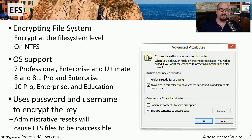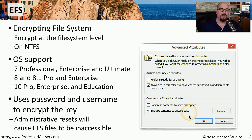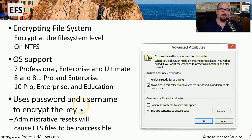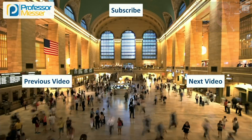Most of the complexity associated with encryption is hidden from users. They simply look at the file's attributes and choose whether to encrypt the contents to secure that information. The encryption is tied to the username and password, which means if someone administratively changes the password on that system and tries to log in, they will not have access to any of those EFS-encrypted files.